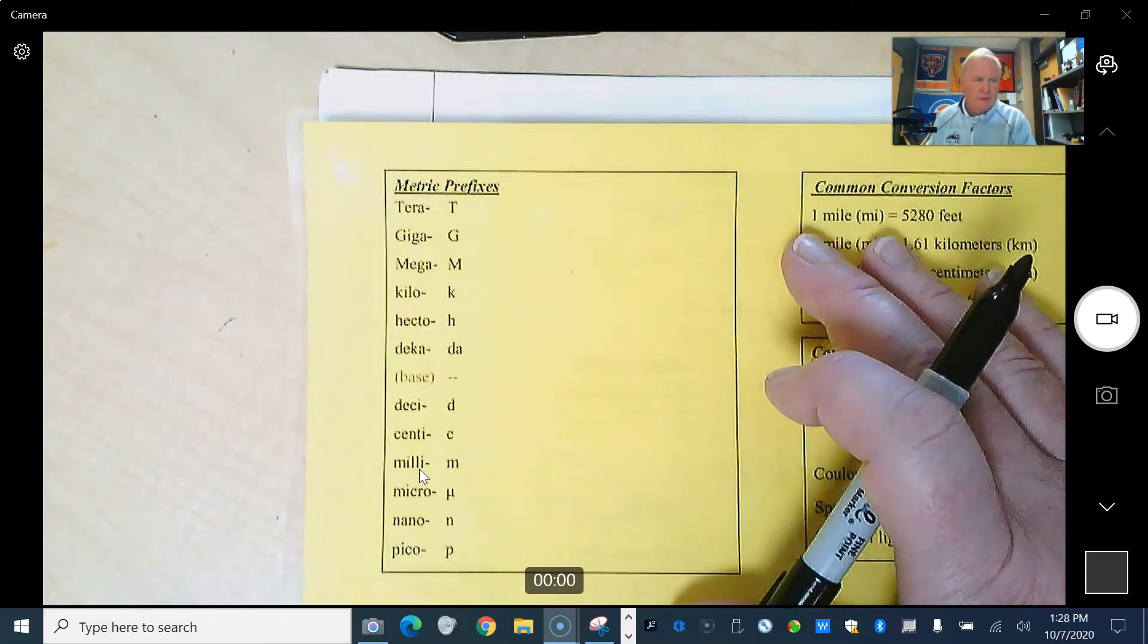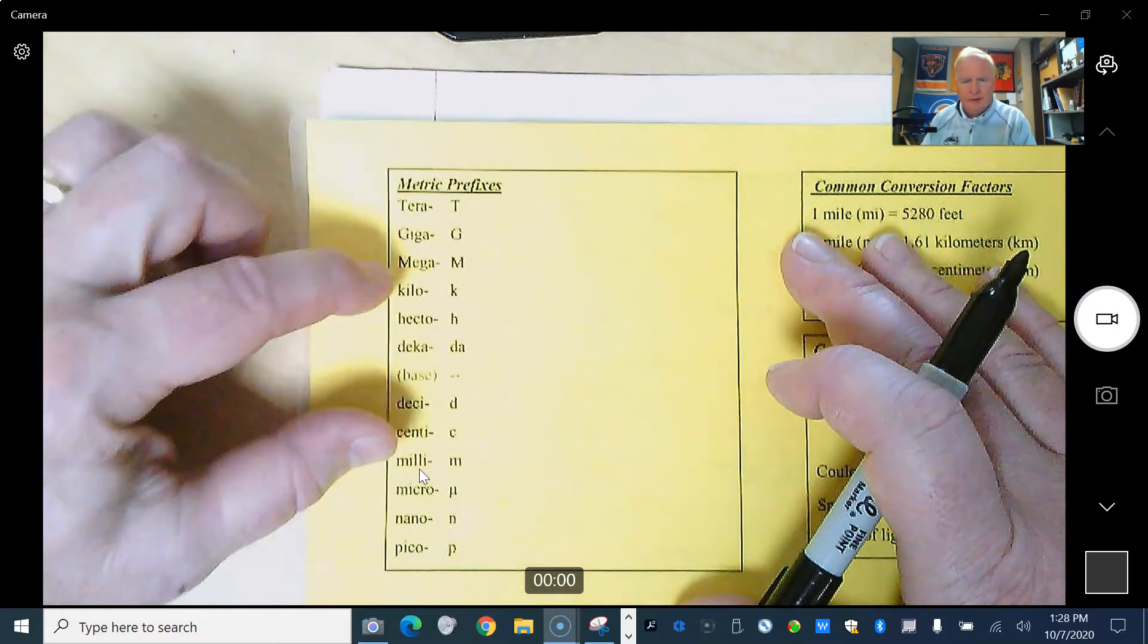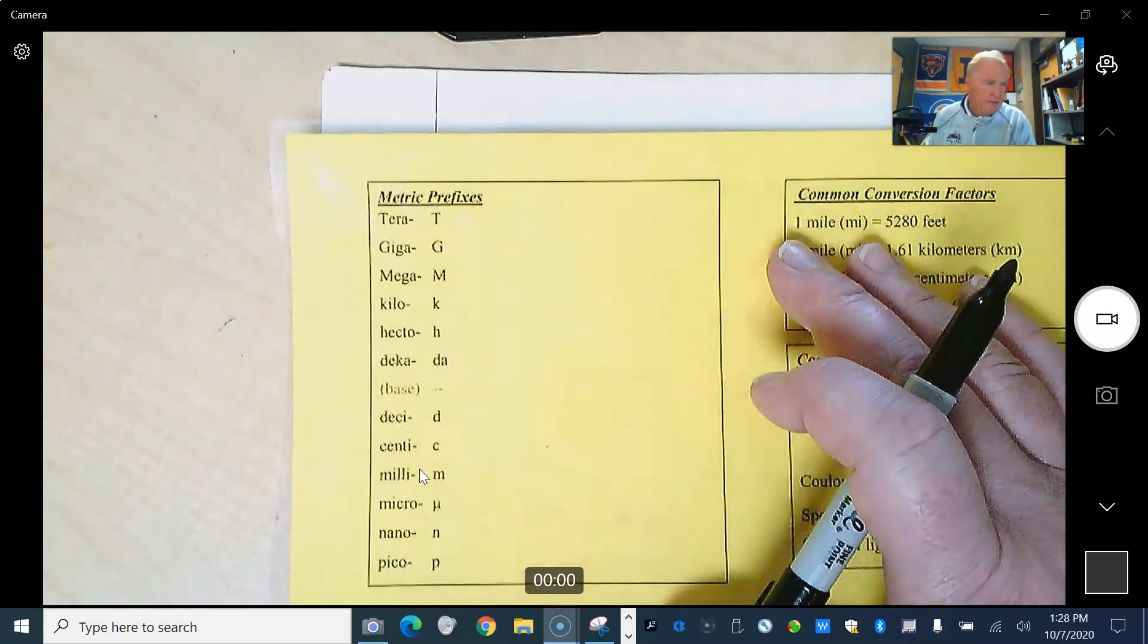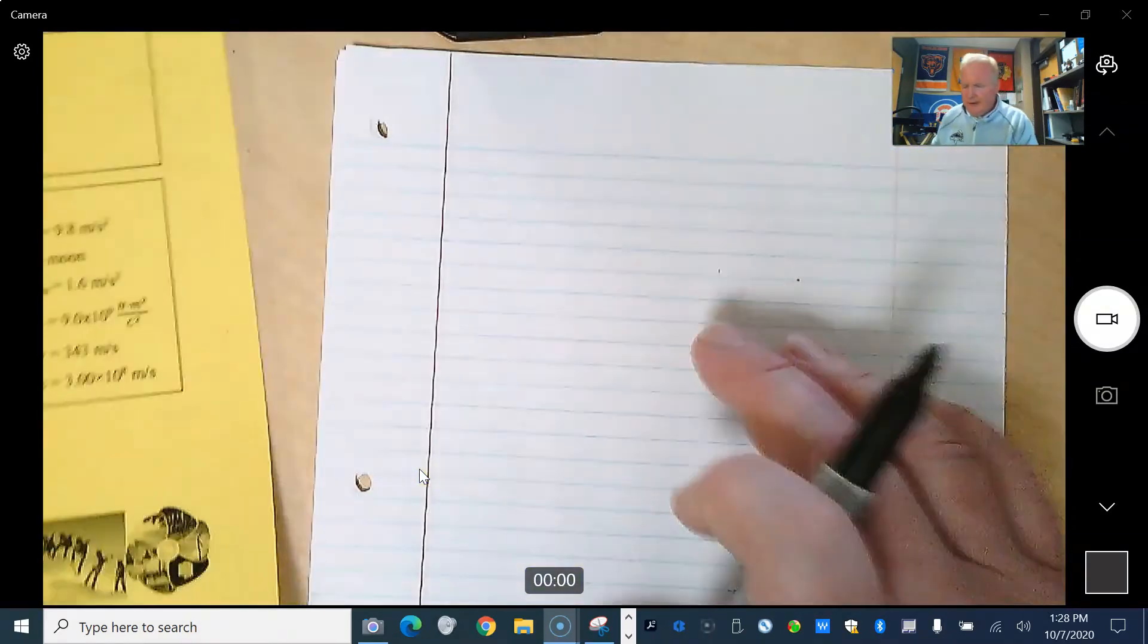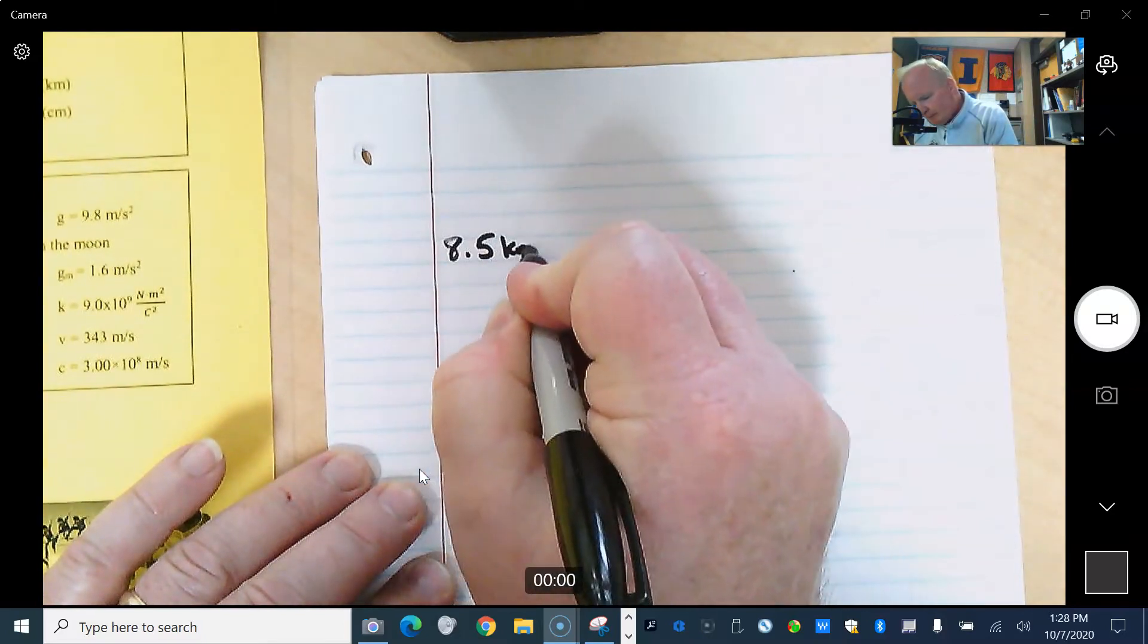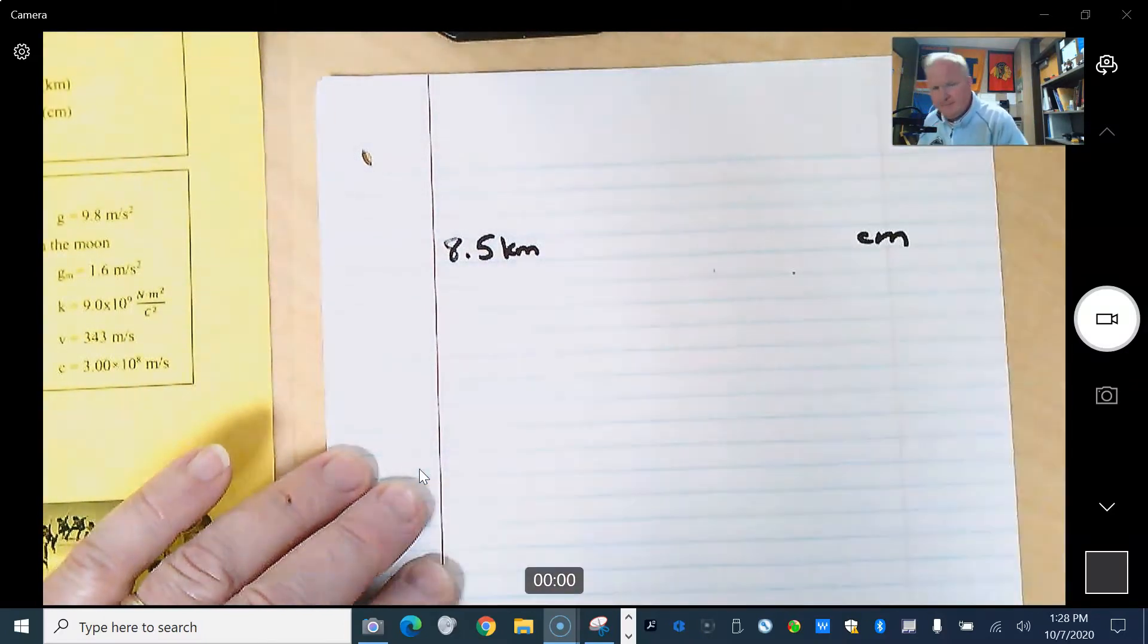And so this is an instance, this first problem is where we're up here, we're in kilometers, and we're going to get down here, and we want to go to centimeters. So the problem is 8.5 kilometers, and we want to get to centimeters.